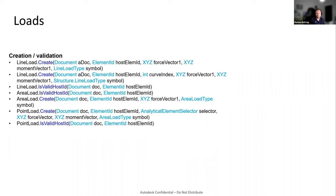Other analytical elements — links, boundary conditions, and loads — were migrated to work with these newly created elements. The API for links, boundaries, and loads remains mostly the same. Some modifications were made; for example, load creation methods were changed slightly — they now receive an element ID for the host element rather than the analytical model stick or surface. We also exposed methods for verifying if hosts are valid for hosting loads, such as LineLoad.IsValidHost.